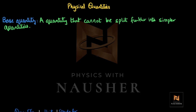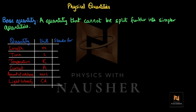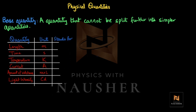You should know what the base quantities are. The quantities we call base are: length, time, temperature, current, amount of substance, and light intensity. This is a very important table.